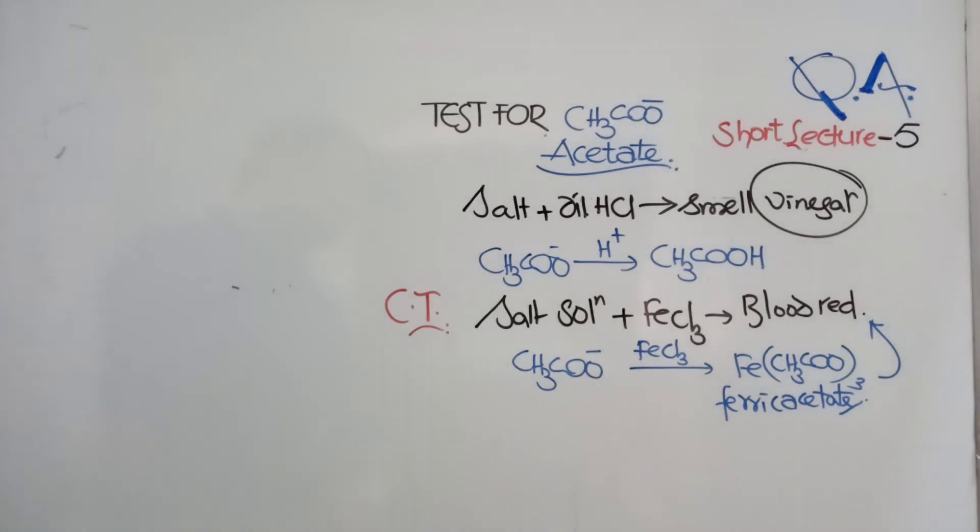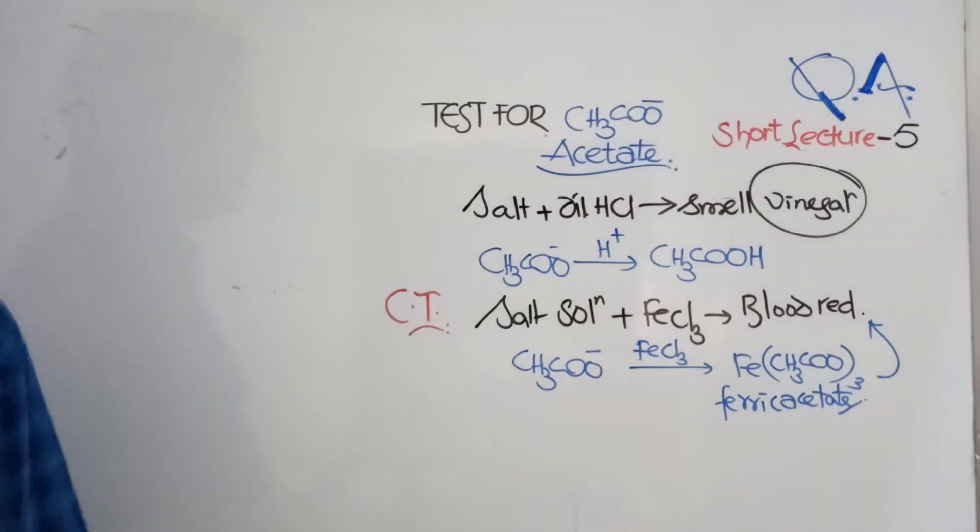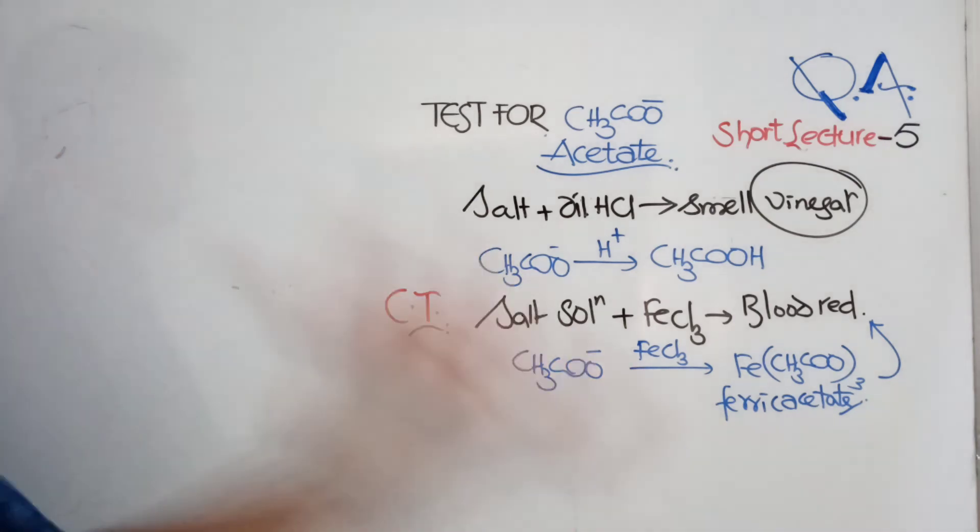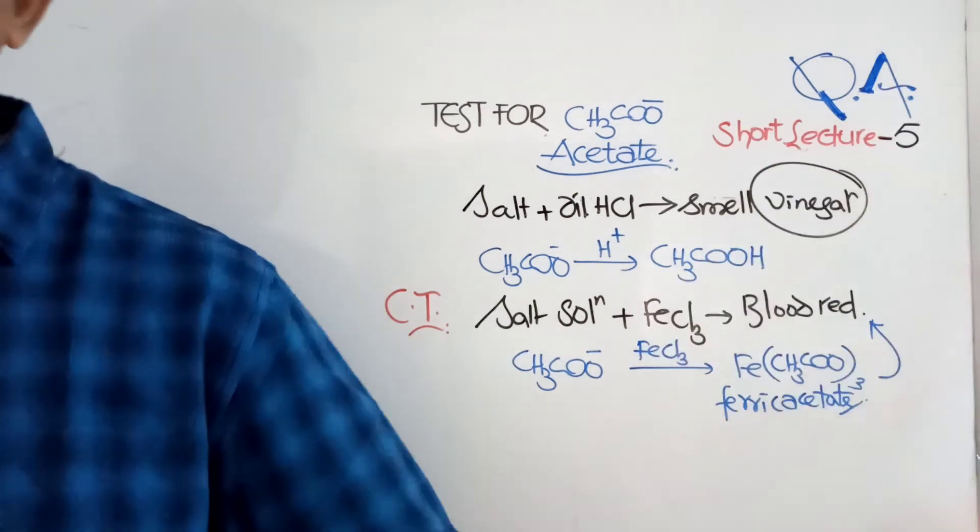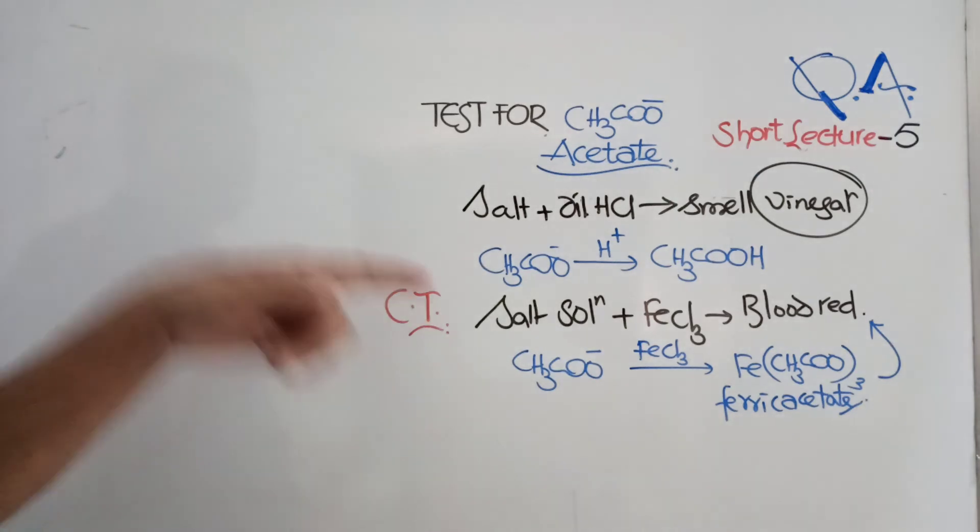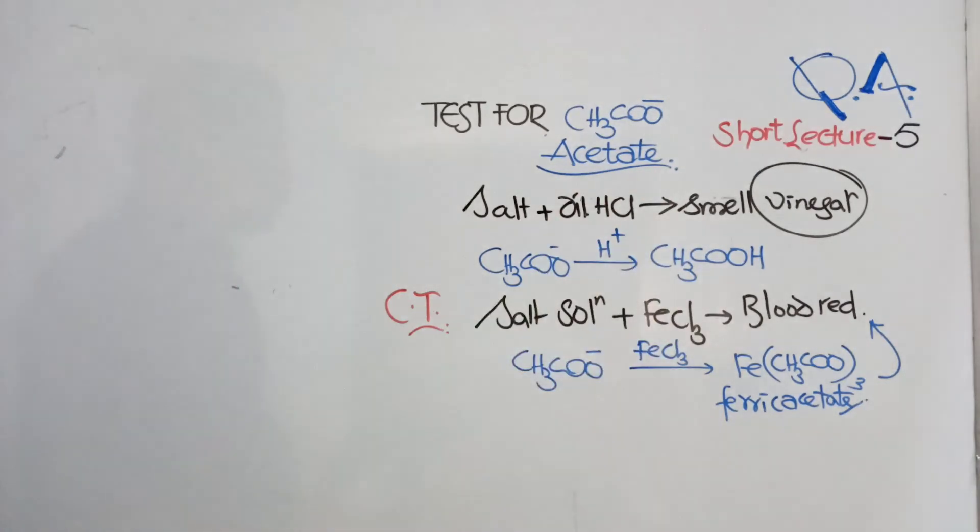It's very simple. When you are adding dilute HCl, if the smell of vinegar is coming, then that is acetic acid. The confirmation can be done by using FeCl3. Blood red color formation of Ferric Acetate confirms the presence of acetate ion.